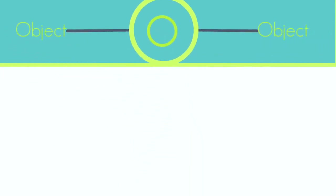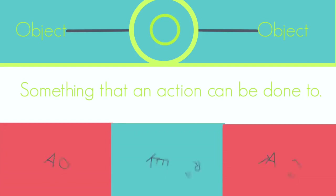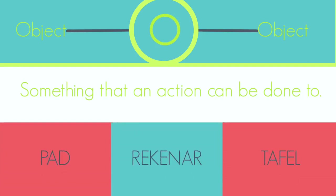The fourth letter in Stompy is O, and it stands for Object. An object in a sentence is a noun, representing something that an action can be done to. For example, you can play on a soccer field, which is actually a place, and you can play with a soccer ball. Examples of objects can be 'rekenaar', 'tafel', and 'pad'. 'Rekenaar' is a computer, 'tafel' is a table, and 'pad' is a road.